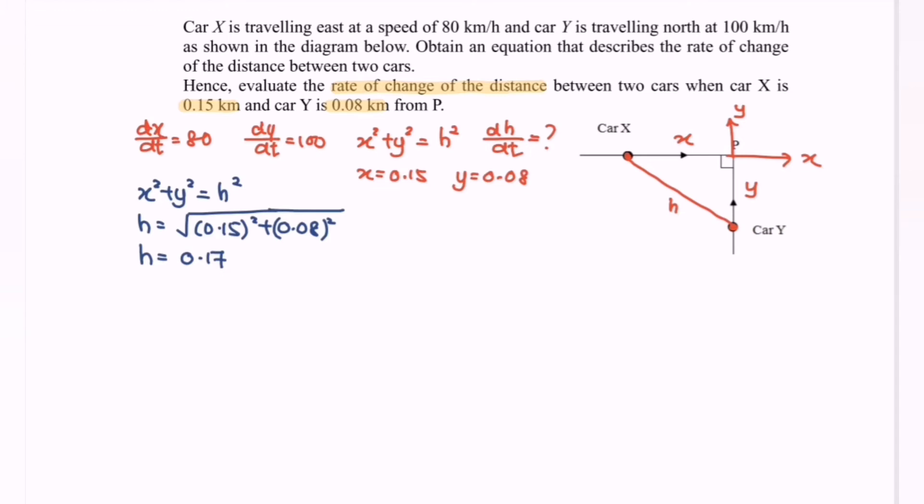Next, in order to find dh/dt, we are going to differentiate H with respect to T. So given the situation X² + Y² = H², we are going to differentiate with respect to T. So first, 2X dx/dt + 2Y dy/dt. Next, we have 2X dx/dt + 2Y dy/dt = 2H dh/dt. Simplify the situation and we will have X dx/dt + Y dy/dt = H dh/dt.